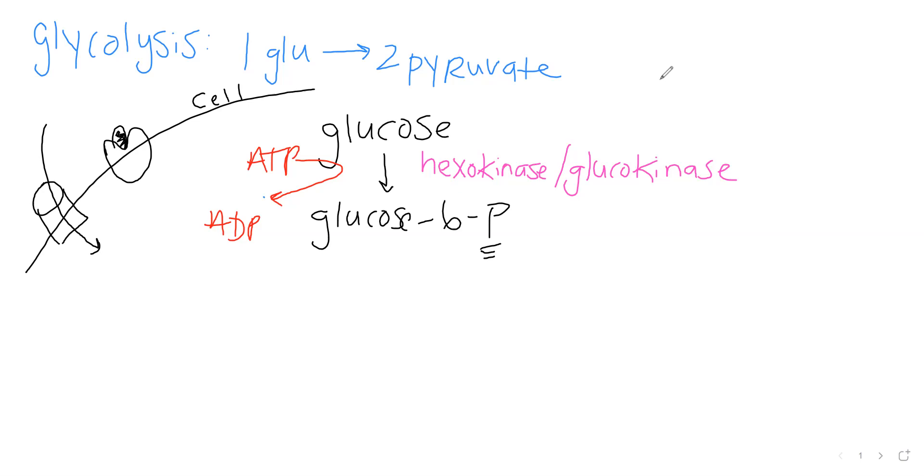All right, so at this point, the cell has to decide, is it going to continue on with glycolysis, or are we going to make glycogen? So if the cell does not need additional ATP, this glucose-6-phosphate is then going to go make glycogen. But because we've identified that this cell does in fact need energy, we're going to take glucose-6-phosphate and it's going to become fructose-6-phosphate.